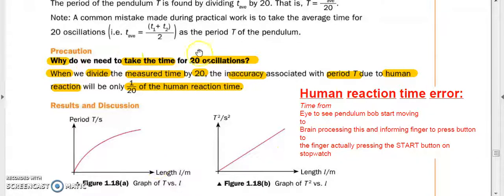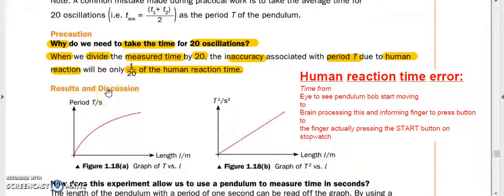That's why we need to take the time for not just one oscillation, but at least 10 or 20. When we divide the measured time by 20, the inaccuracy of the period due to human reaction will be a fraction of the human reaction time. The human reaction time will be the same amount whether I time it for one oscillation or 100 oscillations. But if I time for 100 oscillations, I'm dividing the error by 100 times, so the error becomes very small. That's why we take more oscillation readings to reduce the human reaction time error. Check out the video on the pendulum where I did a live experiment on how we cut down the error.